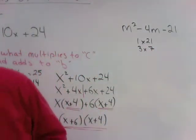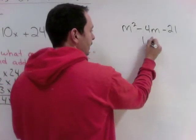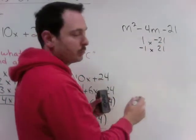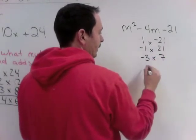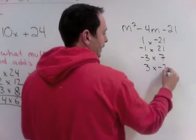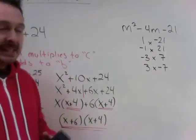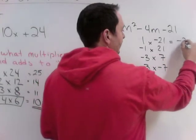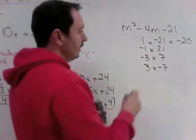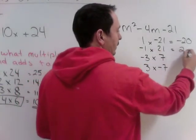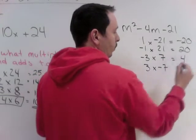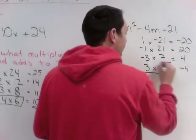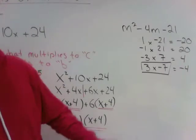So, I can rewrite this as 1 and negative 21, negative 1 and 21 because those each multiplied to negative 21, negative 3 times 7, and positive 3 times negative 7. Each of those multiplied will be negative 21. Let's see what they add to. 1 minus 21 is negative 20. Negative 1 plus 21 is 20. Negative 3 plus 7 is 4. 3 minus 7 is negative 4. So, the two numbers I'm going to work with are 3 and negative 7.